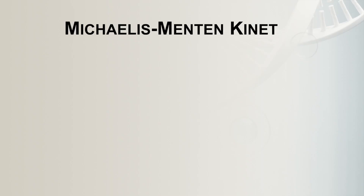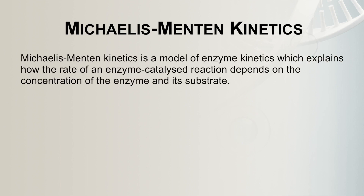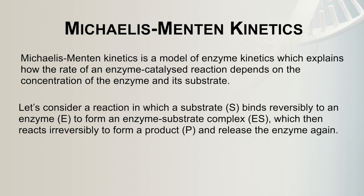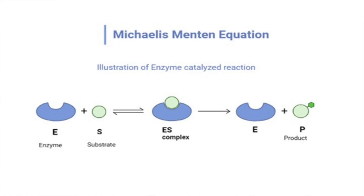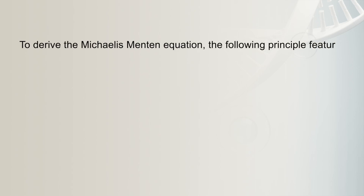Now let us look into Michaelis-Menten kinetics. This model explains how the rate of an enzyme-catalyzed reaction depends on the concentration of enzyme and its substrate. Consider a reaction in which a substrate S binds reversibly to an enzyme E to form an enzyme-substrate complex ES, which in turn reacts irreversibly to form a product P and releases the enzyme again. As shown in the pictorial representation: E + S forms ES complex, which then irreversibly results in the formation of enzyme plus product.